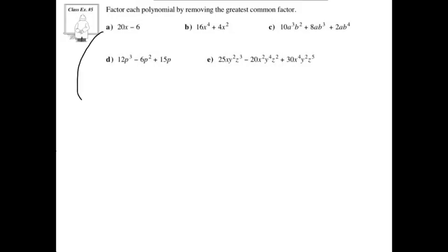Factor each polynomial by removing the greatest common factor. Let's start with a: we've got 20x minus 6.